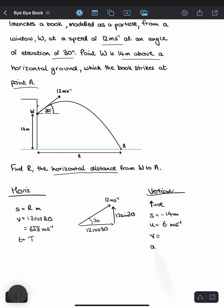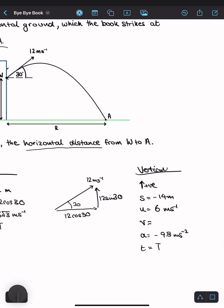Our final velocity hasn't been given. Our acceleration is negative 9.8 meters per second squared because it's always vertically downwards. And the time, well, the time is capital T because it's the same amount. So now I need an equation that has S, U, A, and T in it.